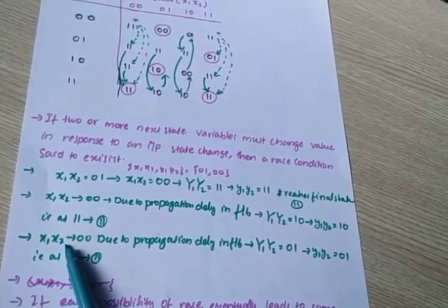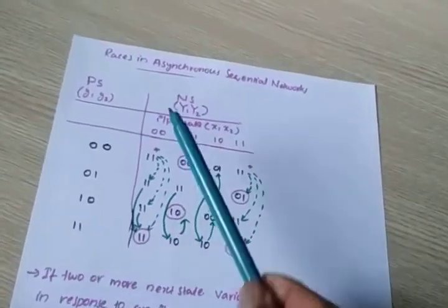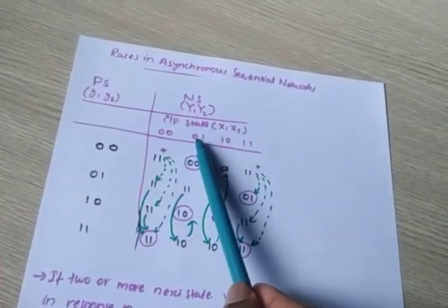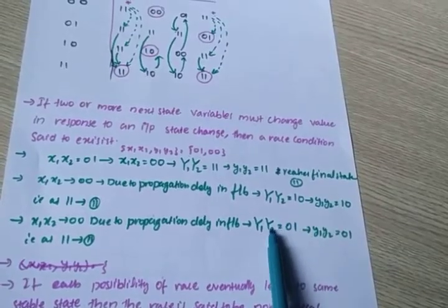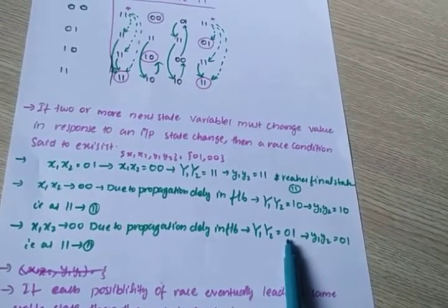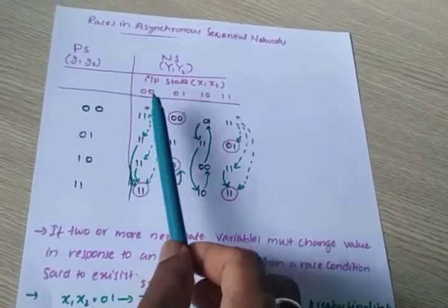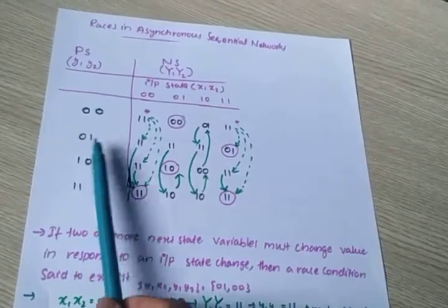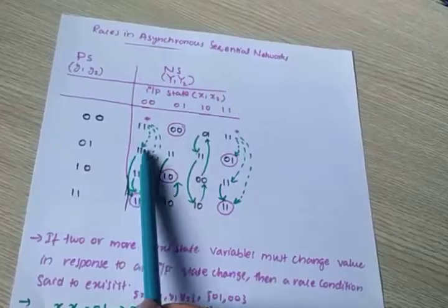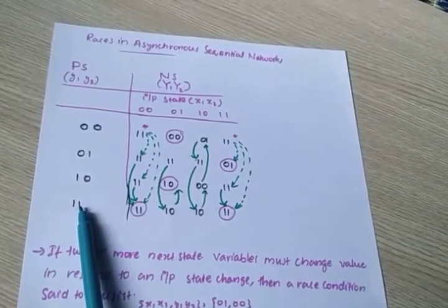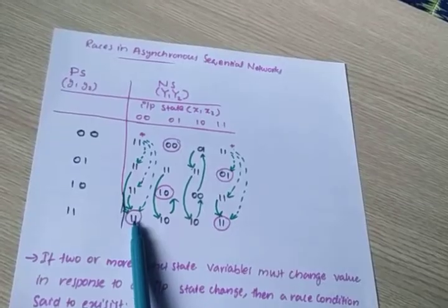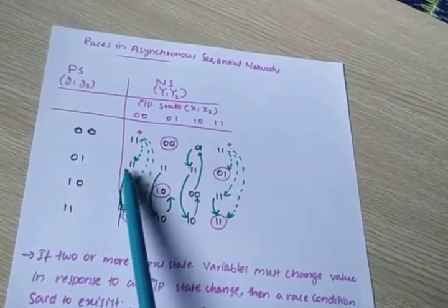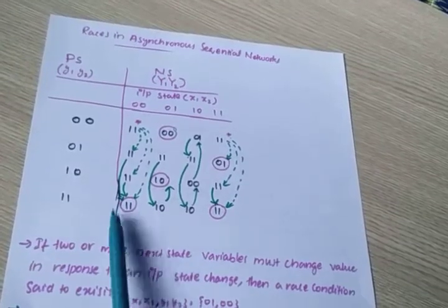Now consider another case: x1, x2 changes from 0, 1 to 0, 0, but this time y1 is delayed instead of y2. So y1 is 0 and y2 is 1, making the present state 0, 1. The next state is 1, 1, which is not stable, so a dashed line goes from 0, 1 to 1, 1. Then 1, 1 becomes the present state and reaches the stable state — shown with a bold line.